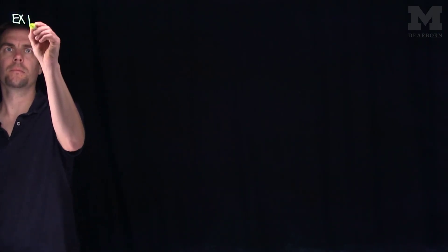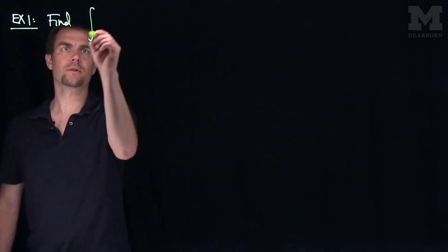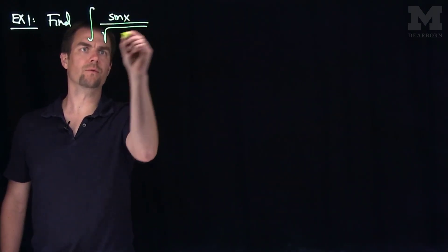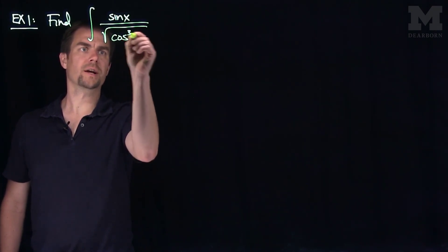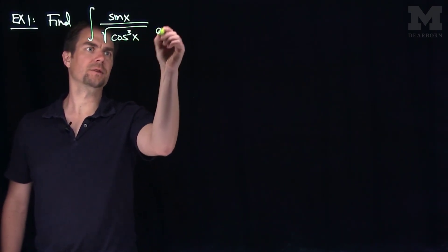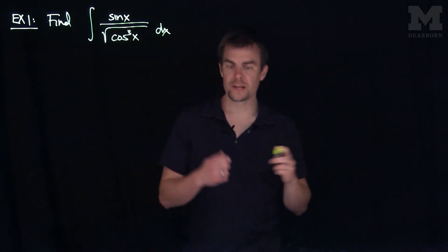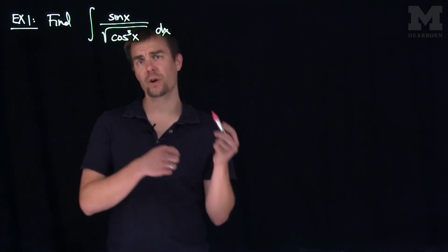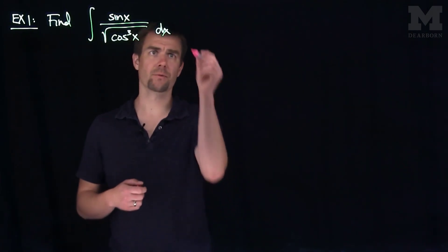Here's the first example. Let's find the integral of sine x over the square root of cosine cubed x dx. This looks messy. The key to this problem is to observe the following: we know that the derivative of cosine is sine, with a negative sign.